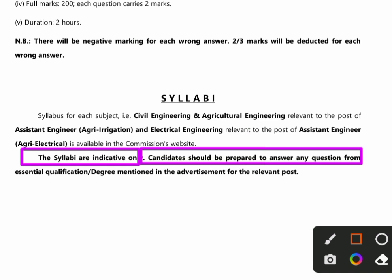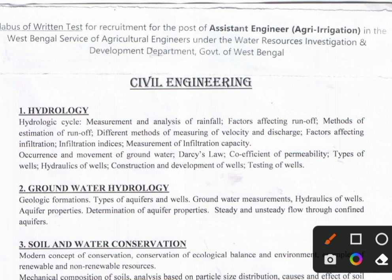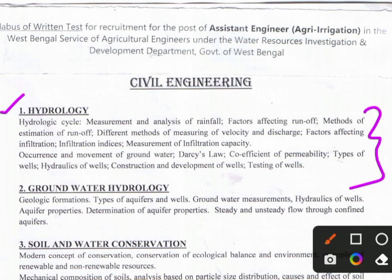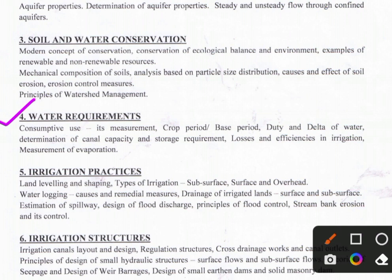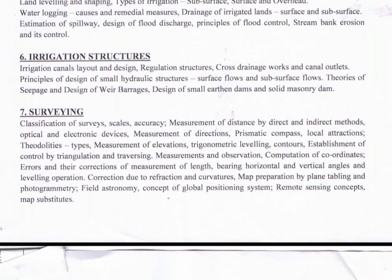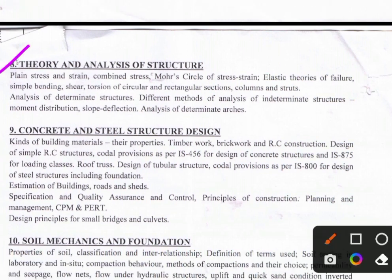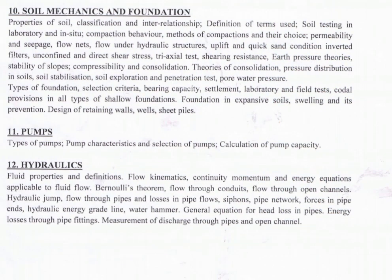The syllabus has been given by the West Bengal Public Service Commission for the civil engineering discipline. Topics include: Hydrology, Groundwater Hydrology, Soil and Water Conservation (watershed management — most questions will be asked from this), Water Requirement of Crops, Irrigation Practices, Irrigation Structures (hydraulic structures), Surveying and Geomatics, Theory and Analysis of Structures (Structural Analysis Vol. 1 and 2), RCC and Steel Structural Design, Soil Mechanics and Foundation Engineering, and Pumps and Hydraulics.